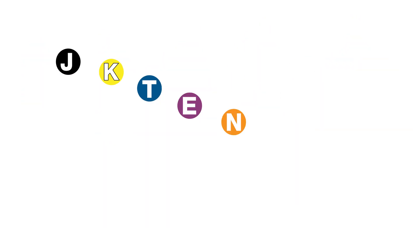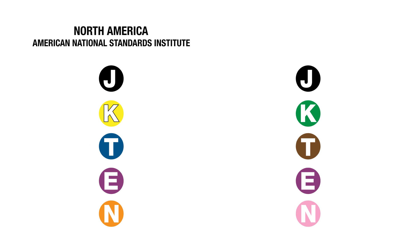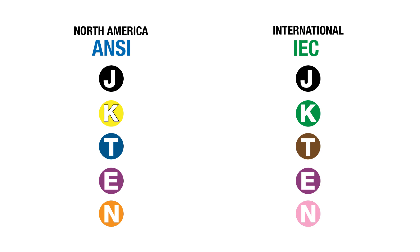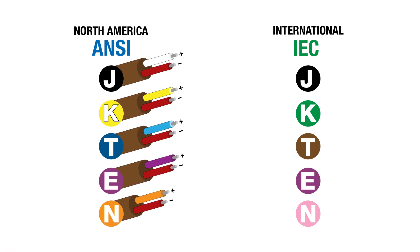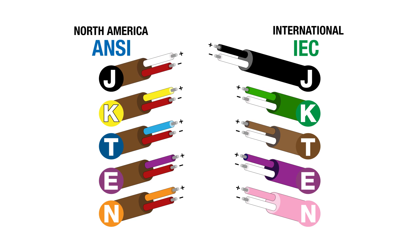And just to keep us all on our toes, these letter designations can correspond to two different color code standards. In North America, the American National Standards Institute, or ANSI, color code is used, while the rest of the world recognizes the International Electrotechnical Commission Standard, or IEC, as the standard color code. To identify which color code a thermocouple is compliant with, look no further than the negative lead wire. On an ANSI-coded thermocouple, the negative lead wire will be red, while on an IEC-coded thermocouple, the negative lead wire will be white.